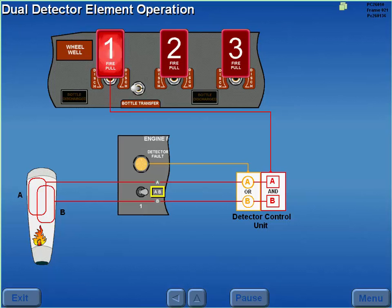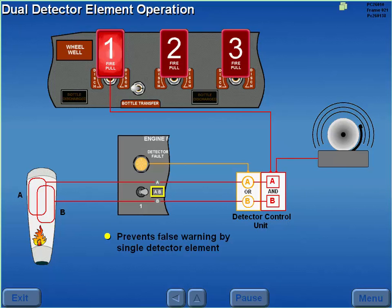The fire warning consists of the respective fire handle and detector fault lights illuminating and the ringing of the fire warning bell. The A-B position prevents false fire warnings by a single detector element.